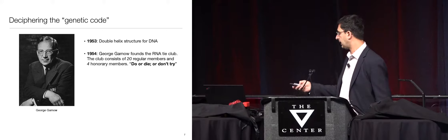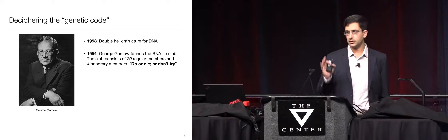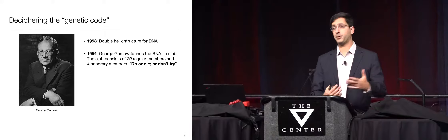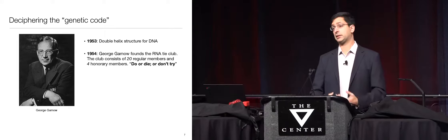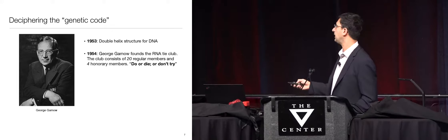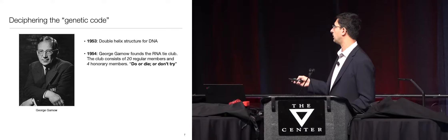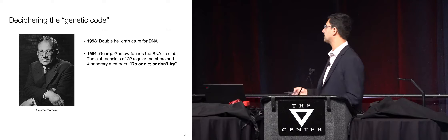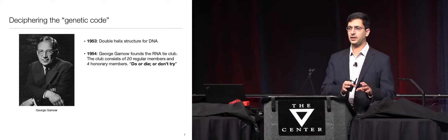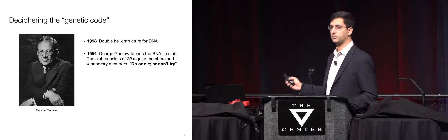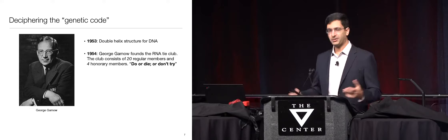At that time, a very well-known physicist, George Gamow, was intent on solving the key question about how nucleic acids relate to protein. Guided by the mindset of Watson and Crick that cleverness and modeling could solve this problem, he formed a society called the RNA Tie Club — an all-male society where everyone got awarded a tie. The purpose of the society, with the motto 'do or die,' was to figure out how DNA codes for protein. And they set out to try to solve this problem.